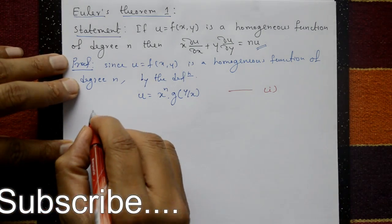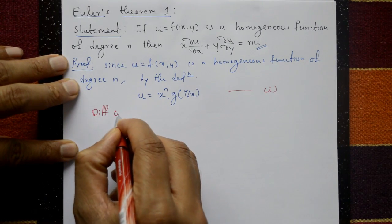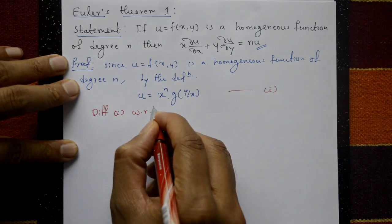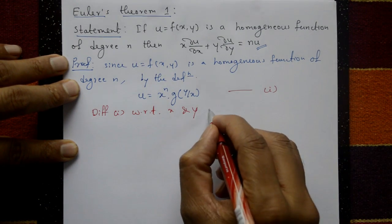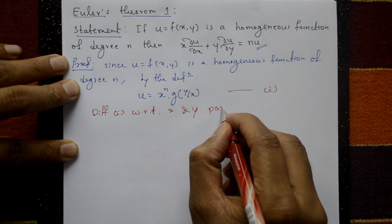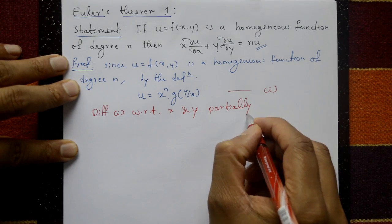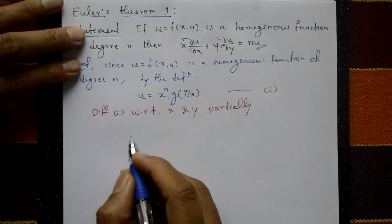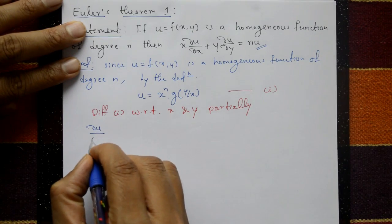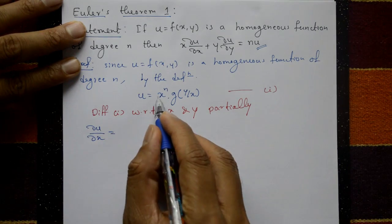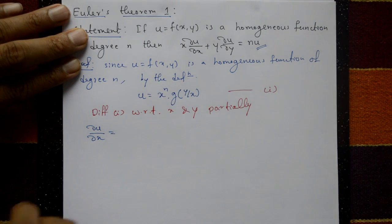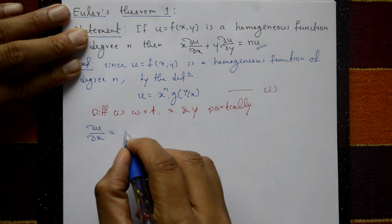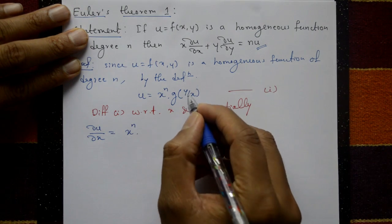Now differentiate equation number one with respect to x first, and after y, partially. So ∂u/∂x: differentiate equation one with respect to x. This is a product rule — u·v form — xⁿ as it is, differentiate this one.